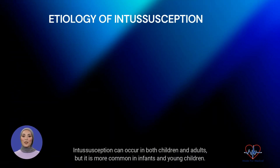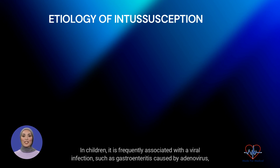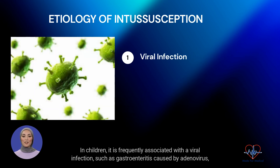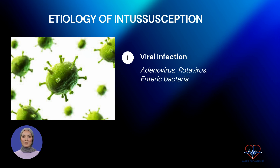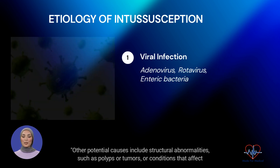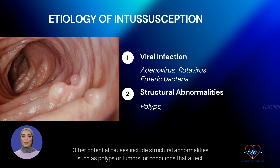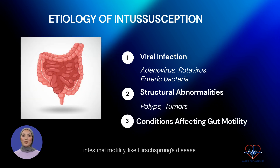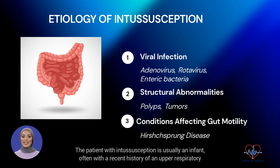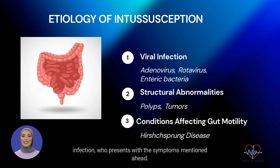Intussusception can occur in both children and adults, but it is more common in infants and young children. In children, it is frequently associated with a viral infection, such as gastroenteritis caused by adenovirus, rotavirus, or enteric bacteria. Other potential causes include structural abnormalities such as polyps or tumors, or conditions that affect intestinal motility like Hirschsprung's disease. The patient with intussusception is usually an infant, often with a recent history of an upper respiratory infection, who presents with the symptoms mentioned ahead.